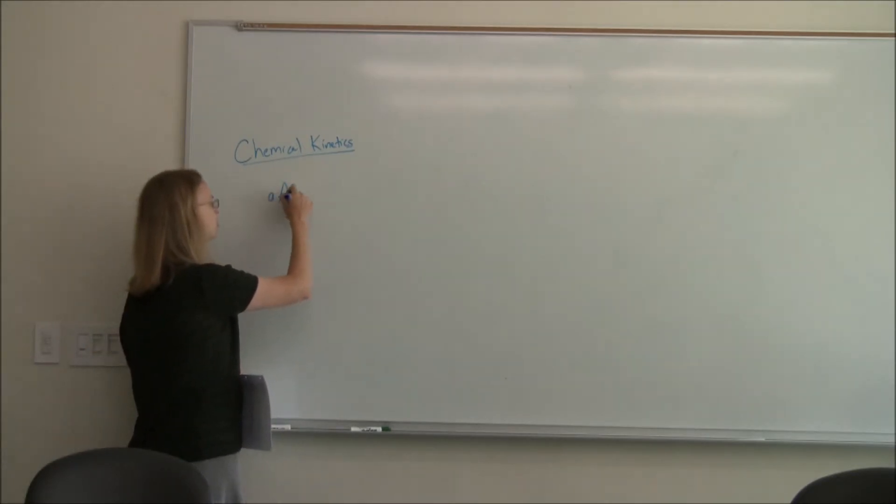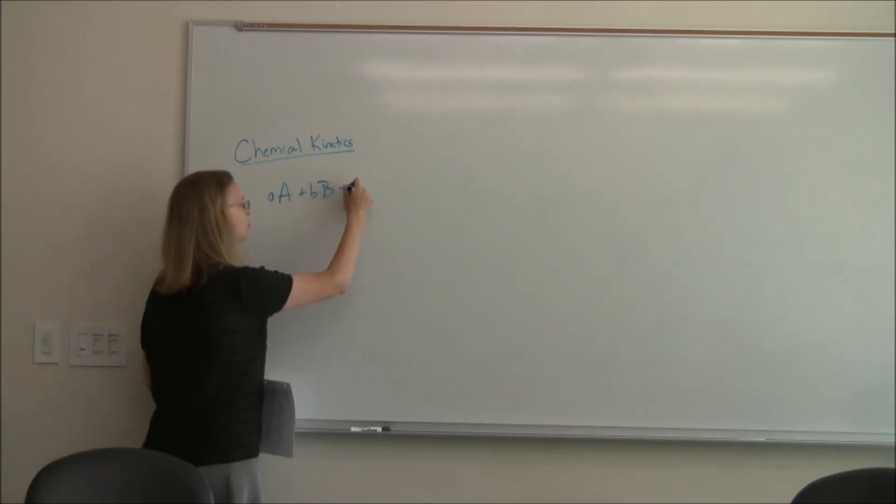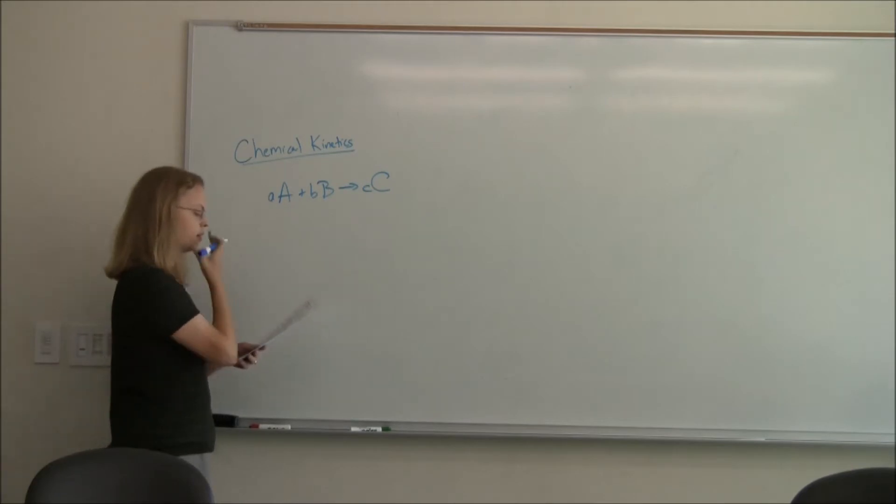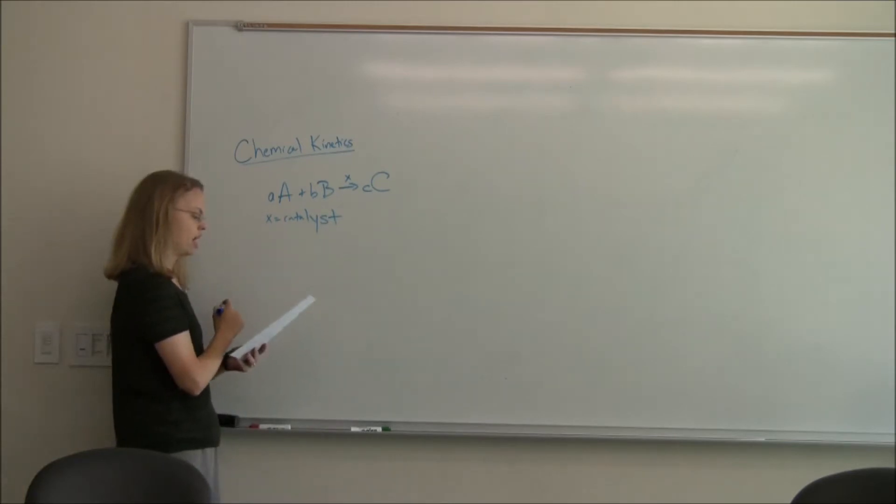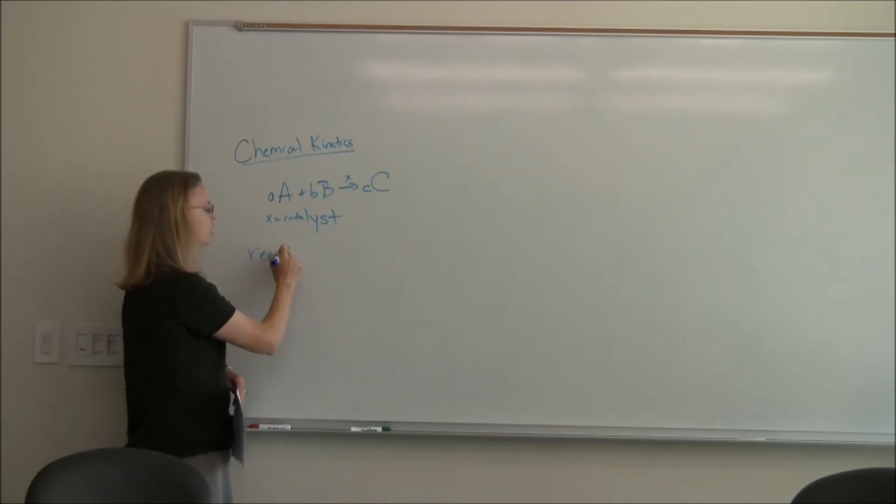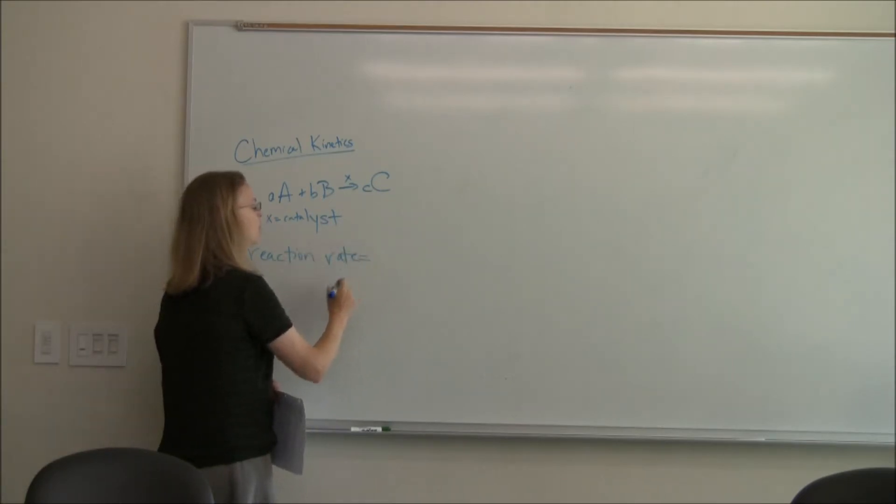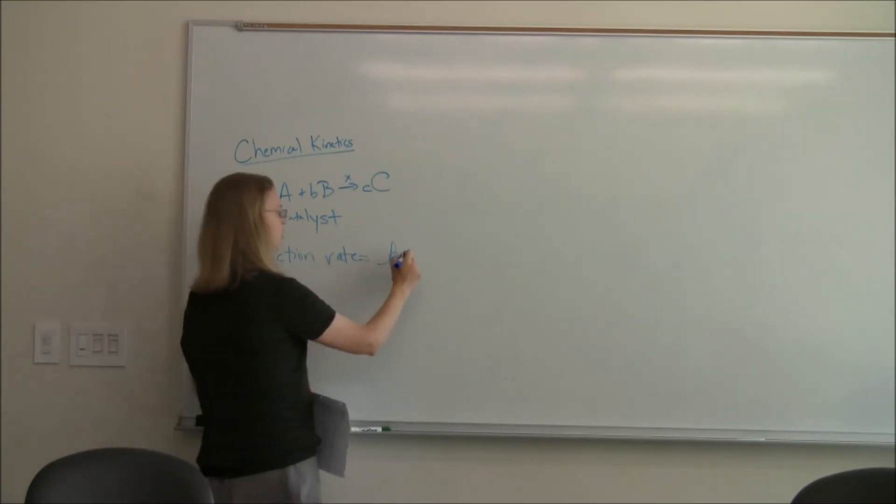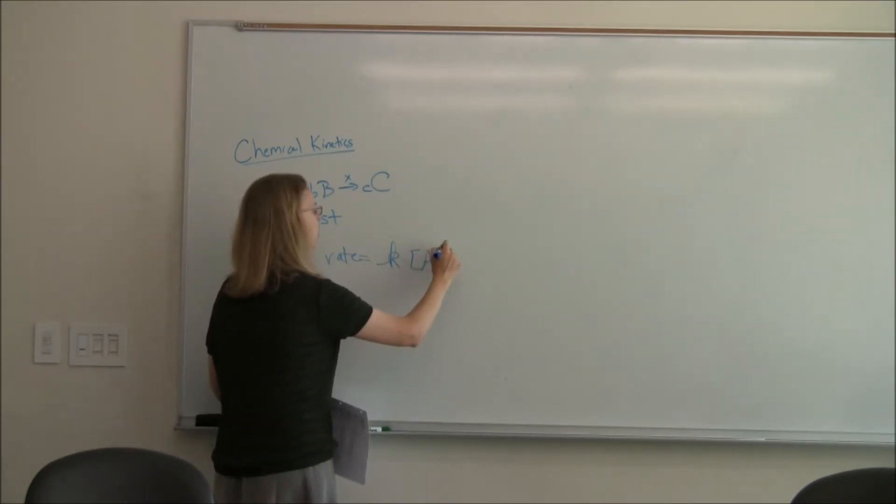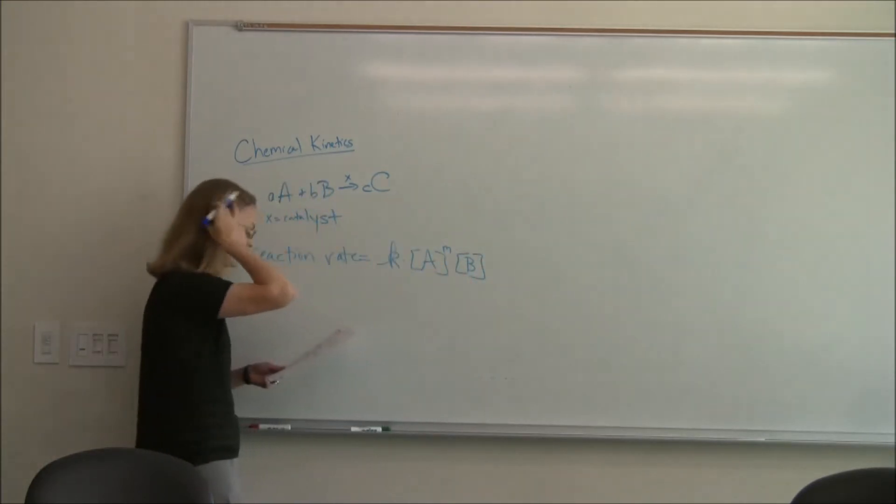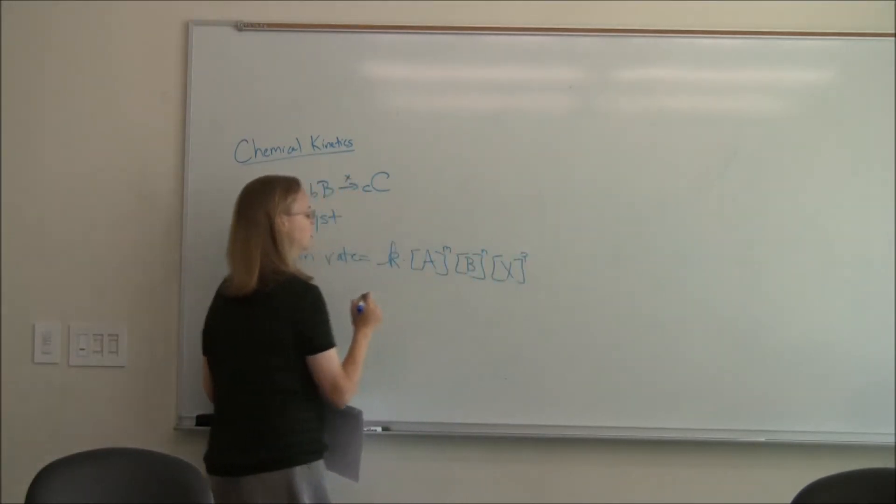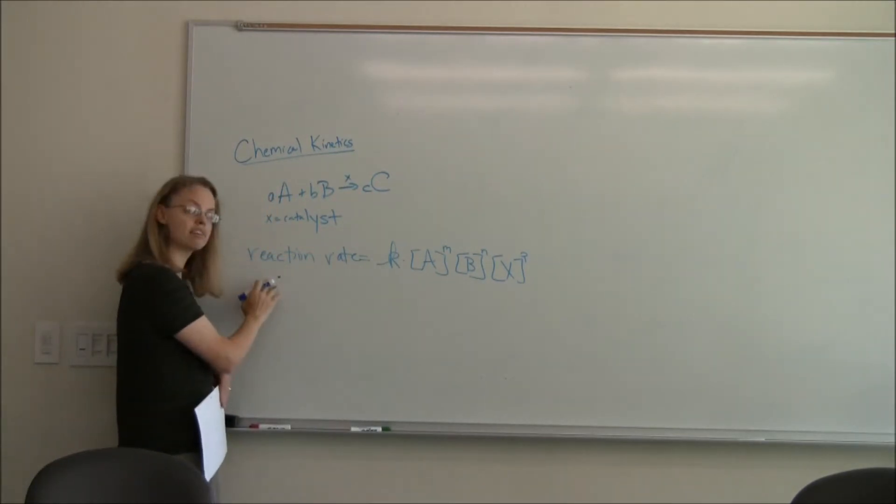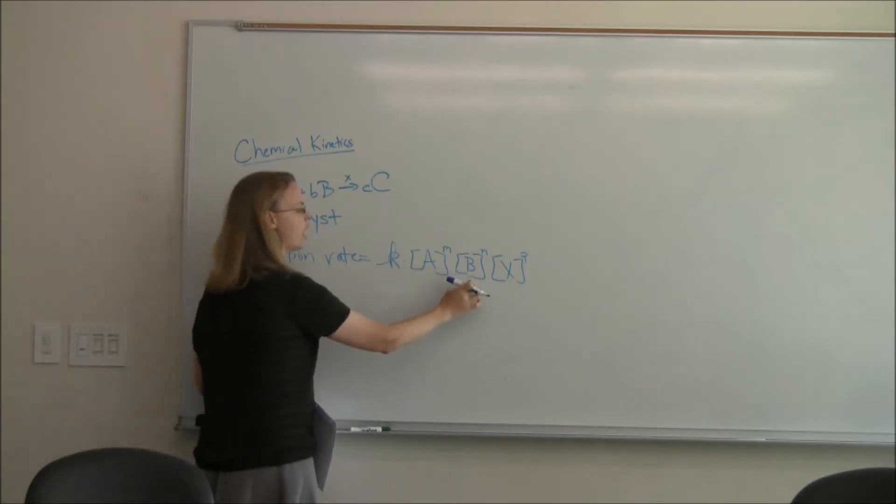Let's think about a general reaction. We have A plus B goes to C, and we'll put in some X, which is going to be a catalyst, perhaps, to help it go. And so we can write a reaction rate constant. If we were to do that, we would say the rate is equal to K, some rate constant, times the concentration of A to the M power times the concentration of B to the N power times the concentration of X to the P power.